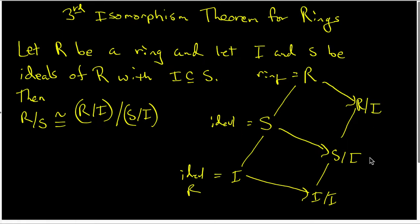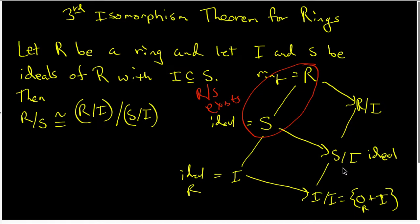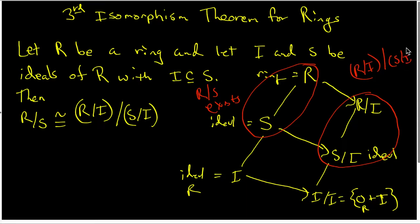Any ideal over here corresponds to an ideal over here. It's also important to understand that I mod I is just the zero of R mod I, which would be zero plus I. Because S is an ideal of R, the quotient structure R mod S exists. And because S mod I is an ideal of R mod I, we also have the quotient structure on this side existing — in other words, R mod I mod S mod I exists.